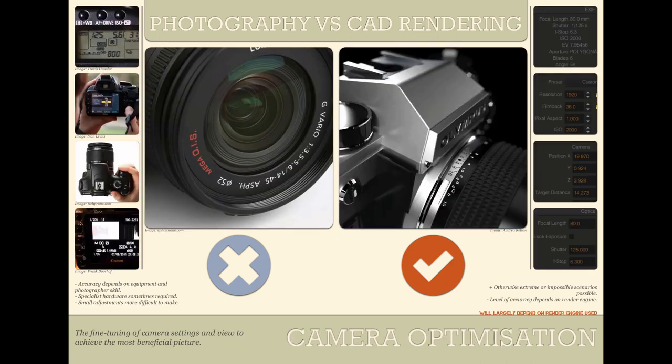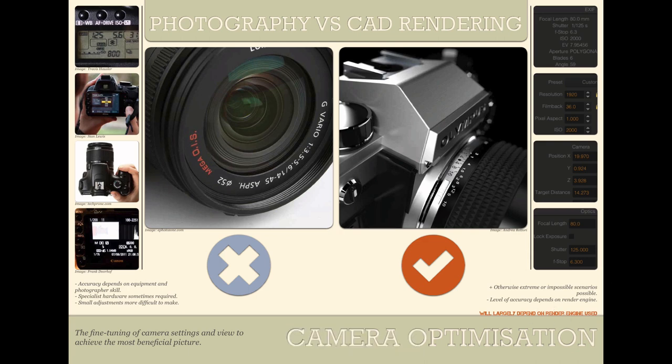Next was camera optimization — making sure that every little fine detail is as good as it possibly can be. These screenshots are from Maxwell simply because that's the render engine I use, but this will largely depend on the render engine used. CAD rendering won, because you can set up a lens without requiring an entirely different physical lens to attach to a DSLR, and you can absolutely guarantee that your focal point is exactly where you need it.